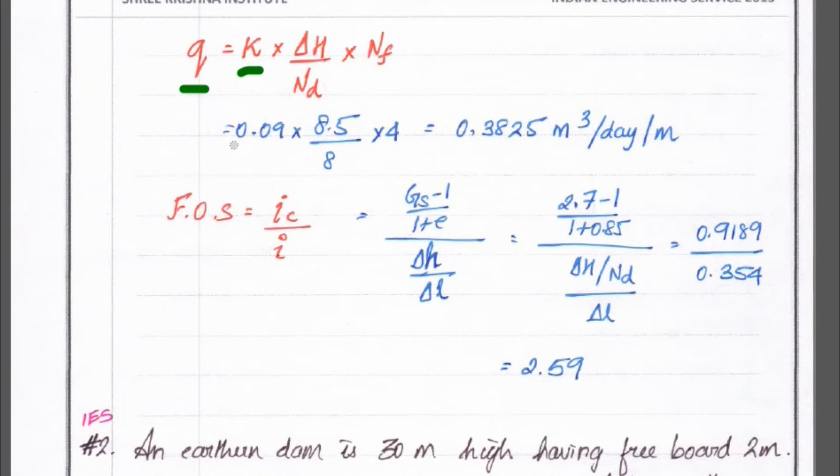The k is given 0.09 and del h is equal to we find out 10 minus 1.5. So, that is equal to 8.5 and divided by number of equipotential drops. So, that is 8 into number of flow channels nf is equal to 4. So, we can solve this problem.